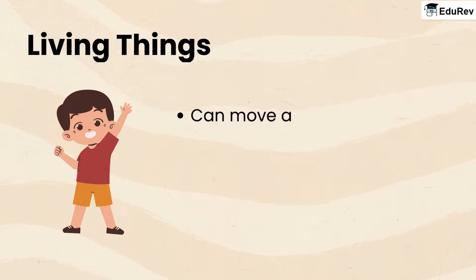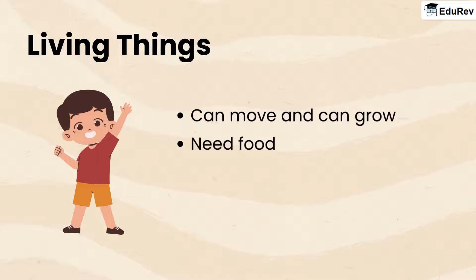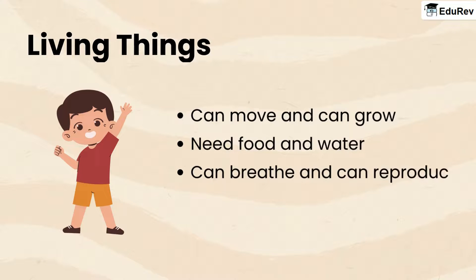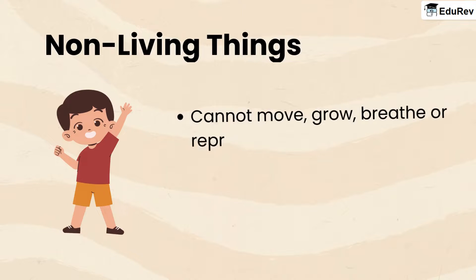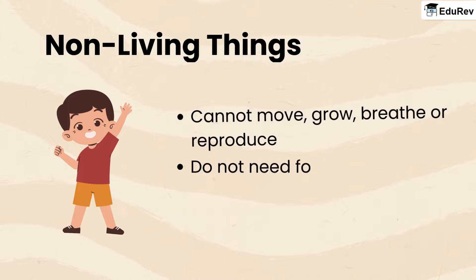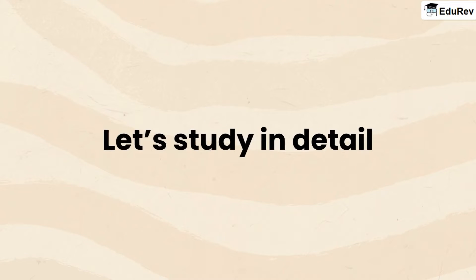Living things can move and can grow. They need food and water. They can breathe and can reproduce. While non-living things cannot move, grow, breathe, or reproduce, and they do not need food and water. Let's study in detail.